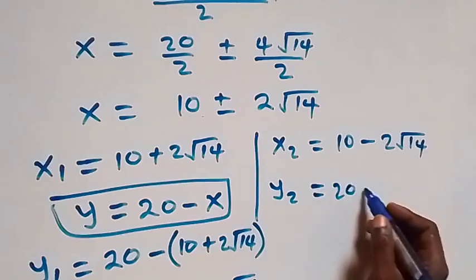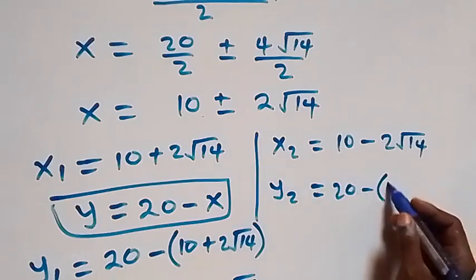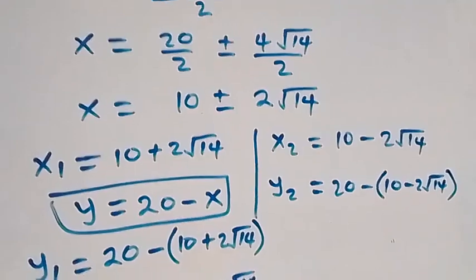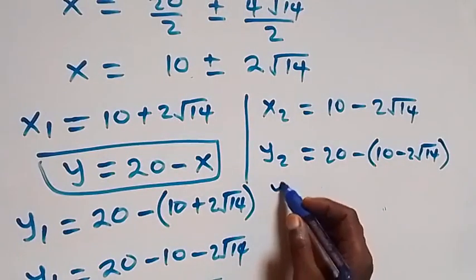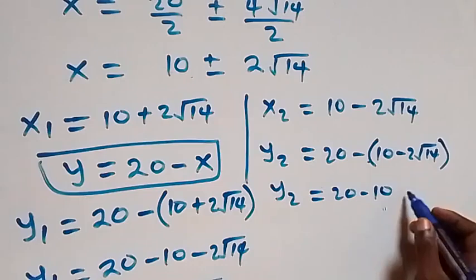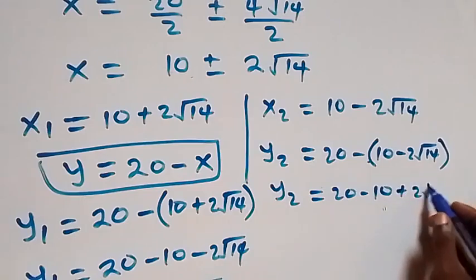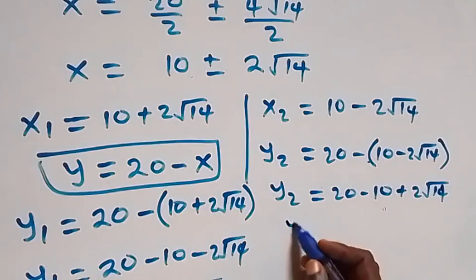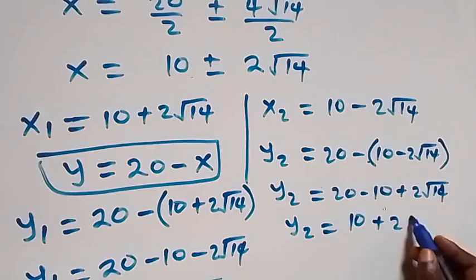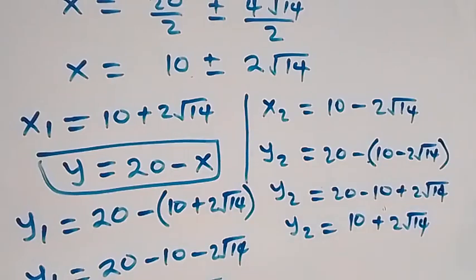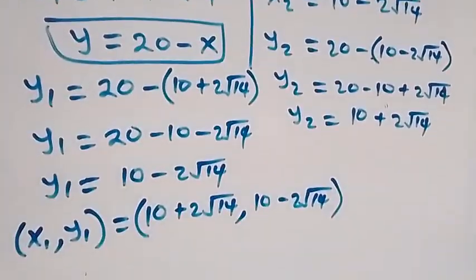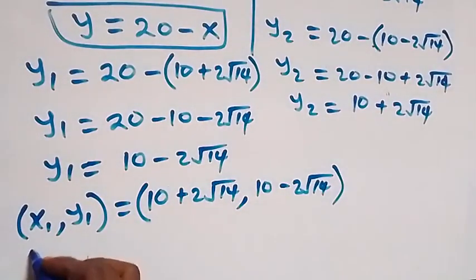y2 equals to 20 minus x2, which is 10 minus 2 root 14. Opening the bracket, y2 equals to 20 minus 10 minus minus, that's plus 2 root 14. So y2 equals to 20 minus 10, that's 10 plus 2 root 14.